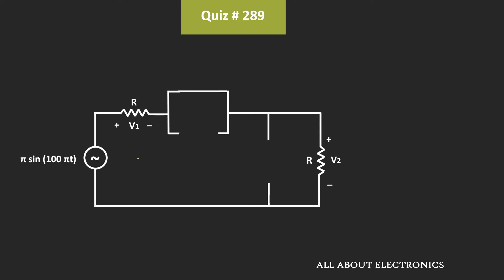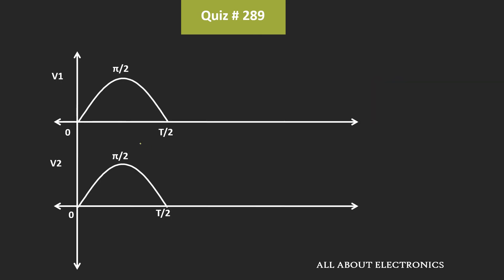As you can see, this input voltage will get divided between these two resistors. That means in this case, V1 is equal to V2, which is equal to Vin divided by 2. During the positive half cycle, if we see this voltage V1 and V2, then it will look like this.